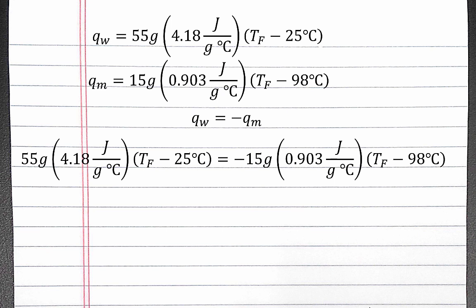and we need to multiply Q m times negative 1. We can distribute the 55 times 4.18 times TF minus 25 on the left, and the negative 15 grams times 0.903 times the quantity TF minus 98 on the right.